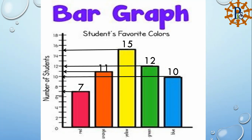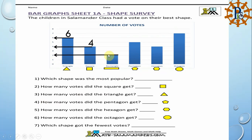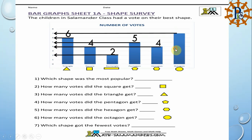Here we have a chart example. The children in Salamander class voted on their favorite shape. The shapes are: triangle, square, rectangle, pentagon, hexagon, and octagon. Reading each bar: triangle is 6, square is 4, rectangle is 2, pentagon is 5, hexagon is 4, and octagon is the highest at 7.